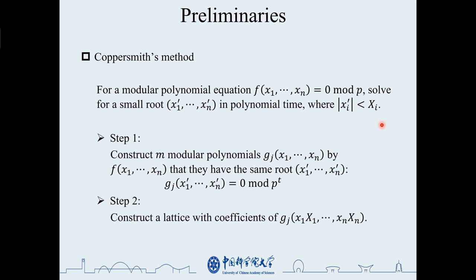The first step is to construct new modular polynomials g to ensure that they have the same root xi prime as the original equation f at modulo t to the power of p. The second step is to construct the lattice using the coefficients of the newly constructed polynomial g, with variables multiplied by the corresponding bounds xi.